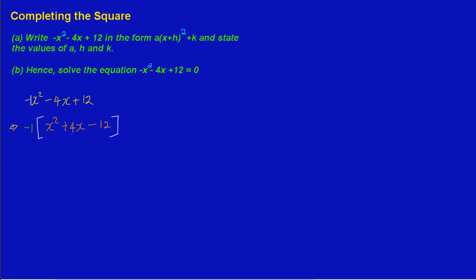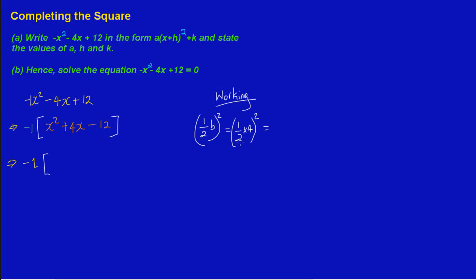From here I'm going to bring down my negative one and open my bracket. On the side, I'll take half of b — in this case b is 4 — so I take a half of 4, all squared. Half of 4 is 2, and we're squaring that, giving us 2 squared.